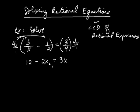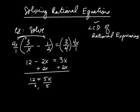Now I can solve this equation. Notice there are no longer rational expressions. I can solve by isolating x. I'm going to add 2x to both sides. Now I'm looking at 12 equals 5x. Divide both sides by 5, and I'm left with x equals 12/5.